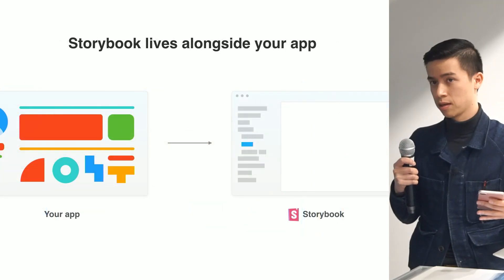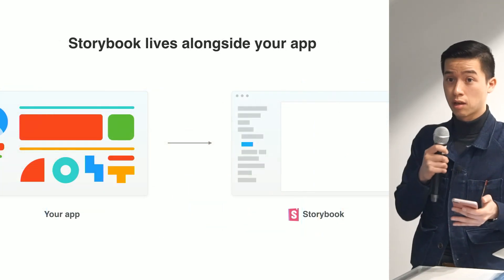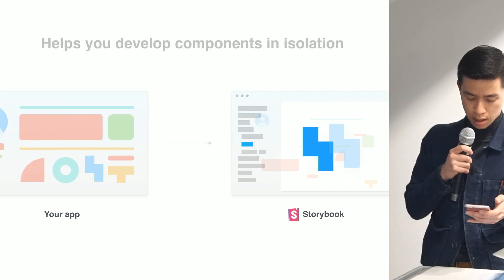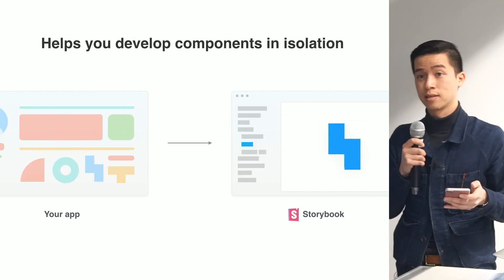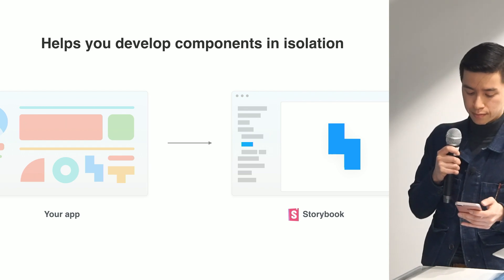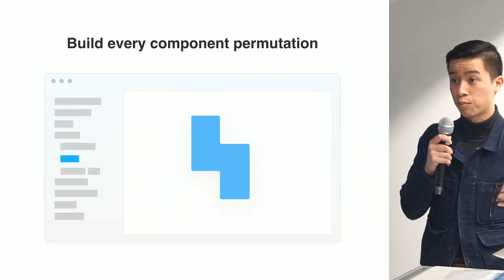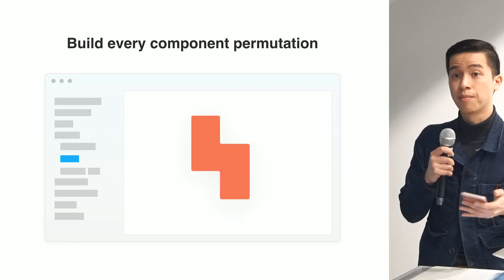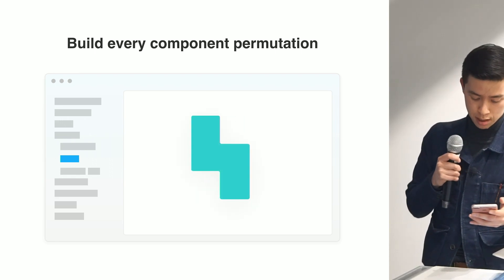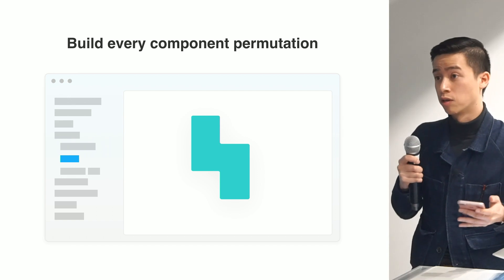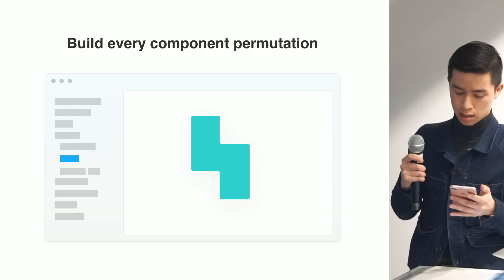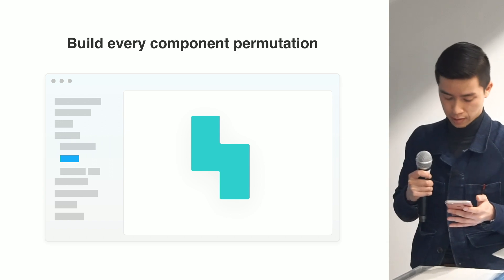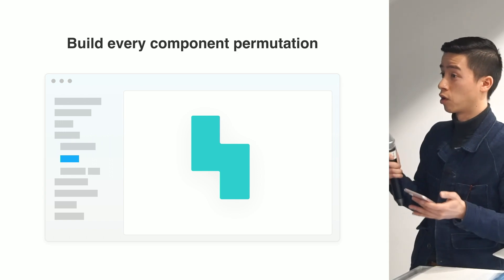So what is Storybook? It's a tool that lives alongside your app in development mode, and it helps you develop components in isolation. You supply props, slots, and events to mock up every component permutation. This gives you greater coverage of every possible UI state, which in turn makes your UI more durable.